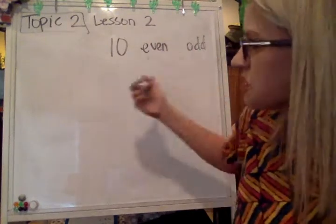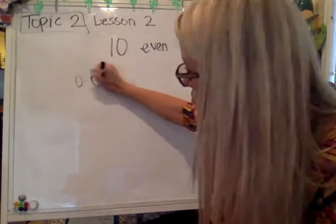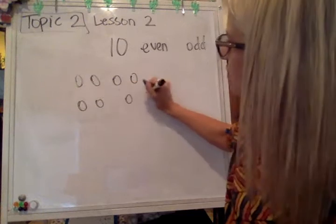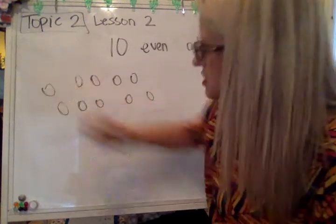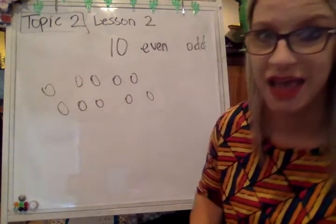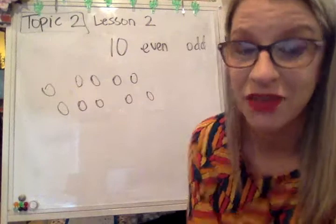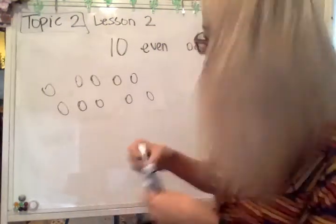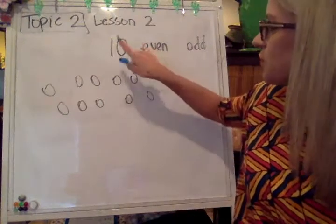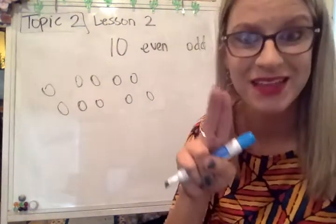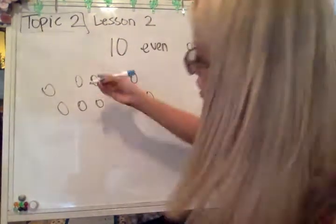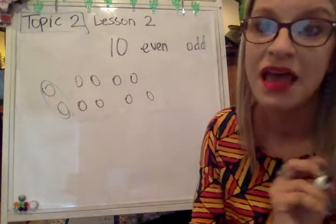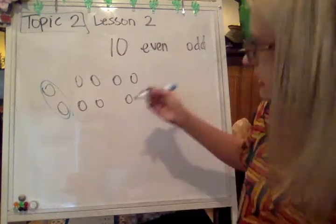Let's discuss the number 10. I'm going to just draw 10 random circles — one, two, three, four, five, six, seven, eight, nine, and there's number 10. Another way that you can do it, besides putting them onto like two plates, kind of what we talked about yesterday, is to pair them up. A pair is two. So if I can pair them up and not have any leftovers, then that would mean that it is even.